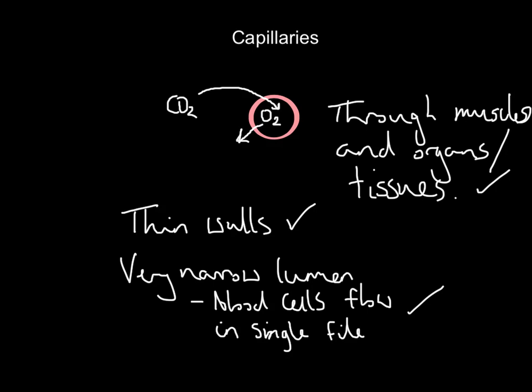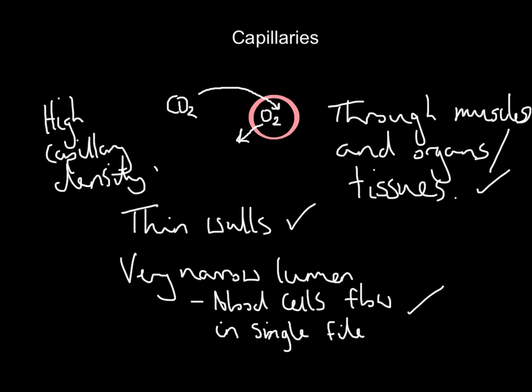Finally, muscles have a high capillary density — meaning there are thousands, even tens of thousands, of capillaries flowing through your muscles. There are far more capillaries than arteries or veins, but because they are so small they can branch everywhere and reach every part inside the muscle and organ.